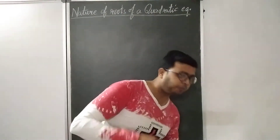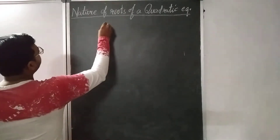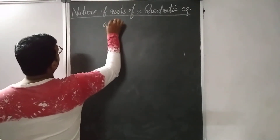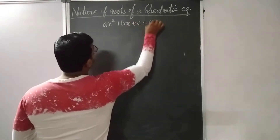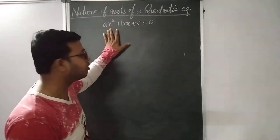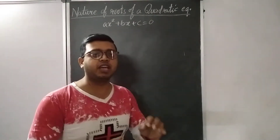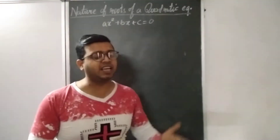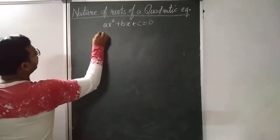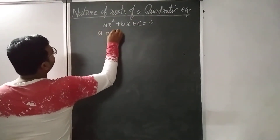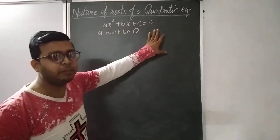Quadratic Equation. Before starting the Nature of Roots, first I am going to tell you the general form of a Quadratic Equation. This is the general form: AX² + BX + C = 0, where A, B and C are constants and X is the variable. One condition is that A cannot be 0. The value of A cannot be 0, but B and C may be 0.